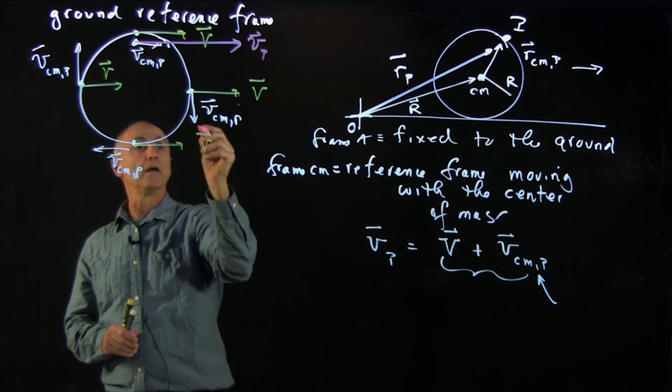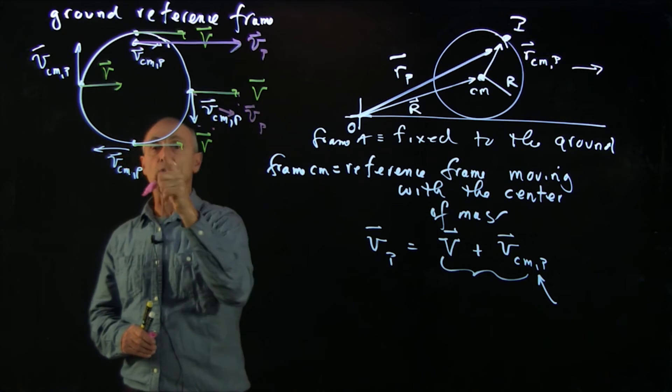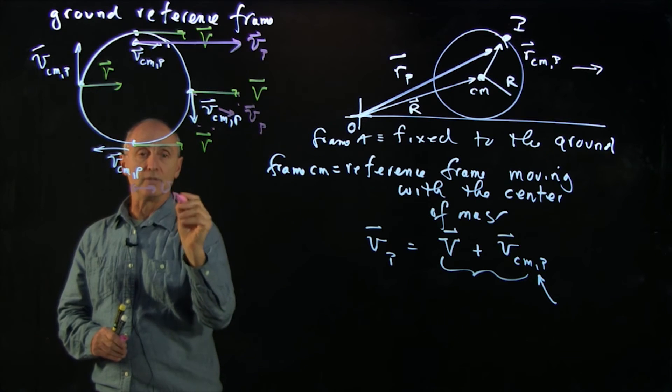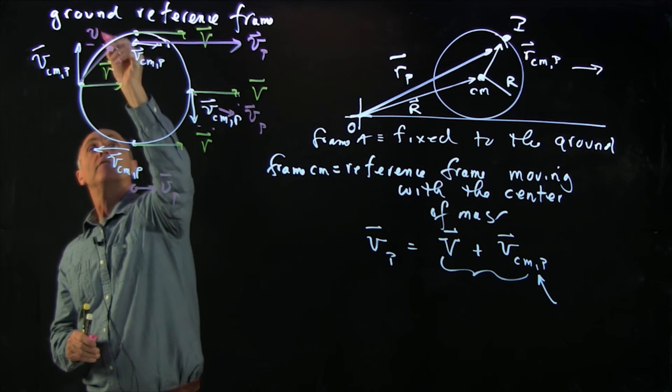Over here it's the vector decomposition, so it's in that direction. Here it's a shorter vector, vp. And over here it's the vector sum, vp.